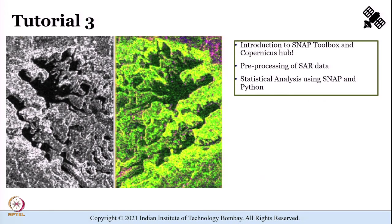In Tutorial 3, we shall work with SNAP — Sentinel Application Platform — which is a tool used for earth observation processing and analysis. SNAP provides processing tools for all three Sentinel toolboxes: Sentinel-1, Sentinel-2, and Sentinel-3. We shall cover how to download the images and how to install the toolboxes of SNAP, before moving on to the different product types and product levels. Once you learn how to download Sentinel SAR C-band data, we shall start performing preprocessing, which will cover radiometric and geometric corrections.